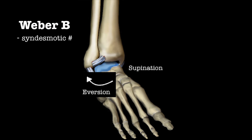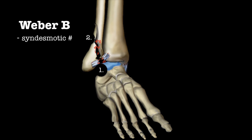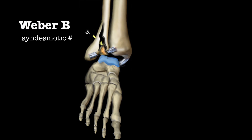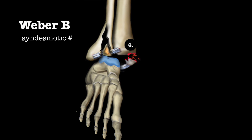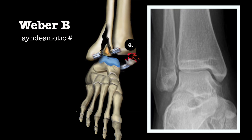In a Weber B fracture there is supination and eversion of the foot. The force can cause the anterior syndesmosis to rupture. There is an oblique fracture of the fibula, rupture of the posterior syndesmosis, and there can either be an avulsion fracture of the medial malleolus or rupture of the medial ligament. Looking at this X-ray, notice that the syndesmosis may be intact but it is disrupted here. There is an oblique fracture of the fibula at the level of the syndesmosis, and there may also be an avulsion fracture of the medial malleolus or medial ligamentous injury.